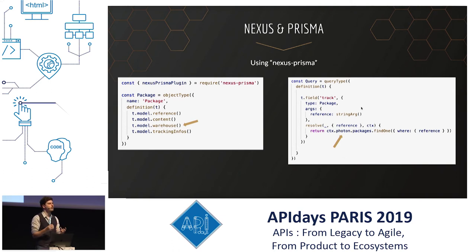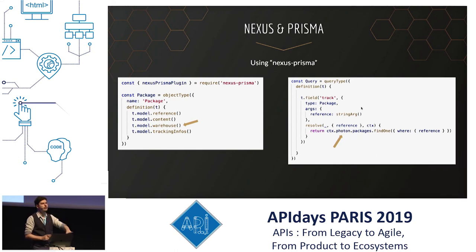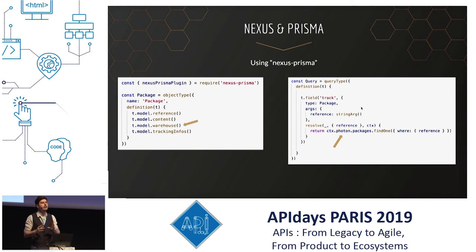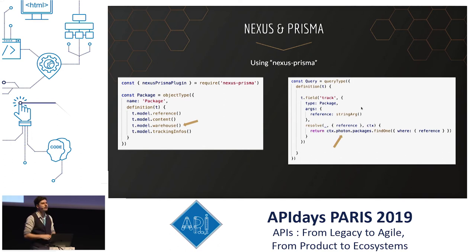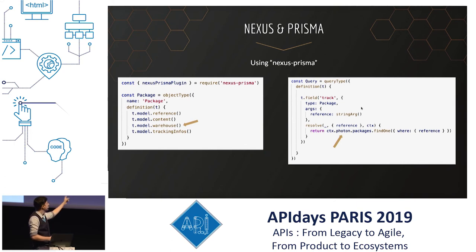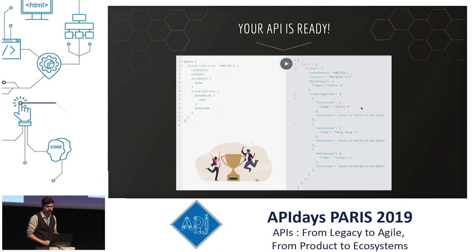From the start of this talk, I told you we want one thing: a tracking API where we give the reference and we want to show the package. So we do that here — doing photon.packages.findOne. As you can see, there is no include this time, because we don't have to manually say that we want the warehouse and the tracking infos. It's a GraphQL schema — if the client asks for more, it's going to link to other types itself.